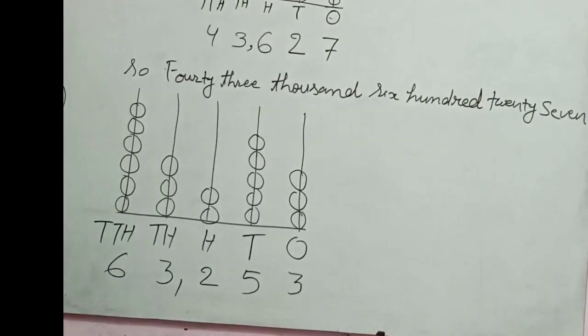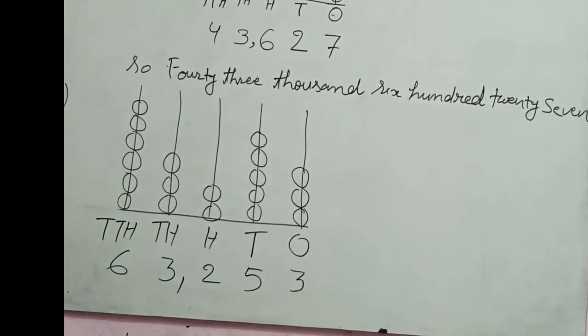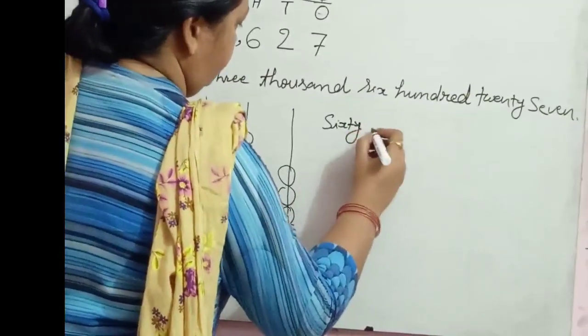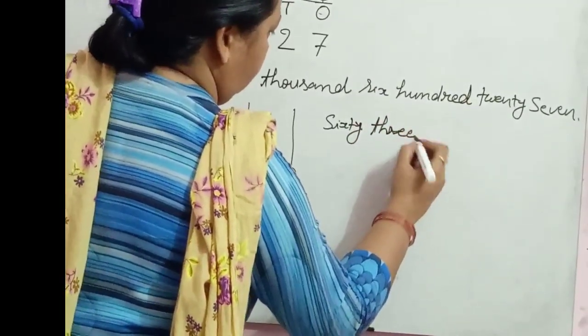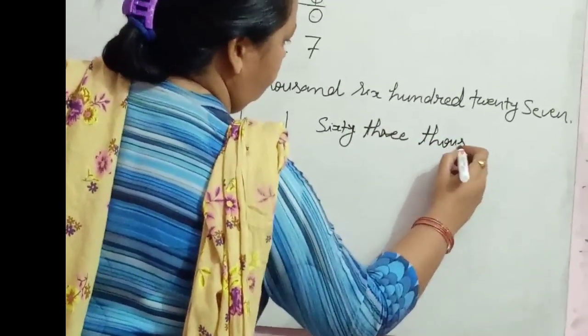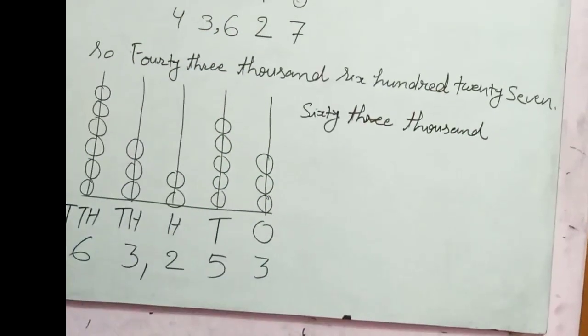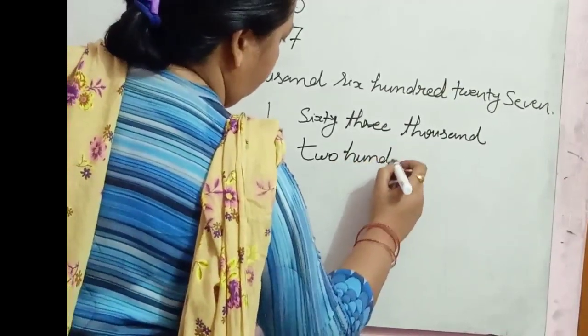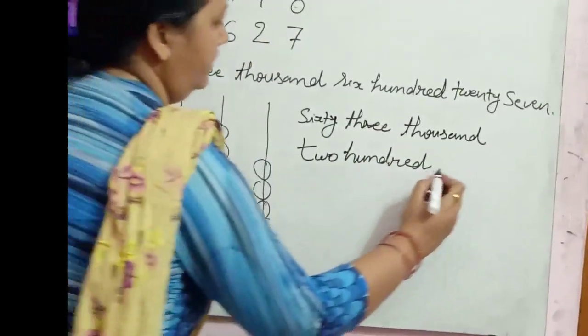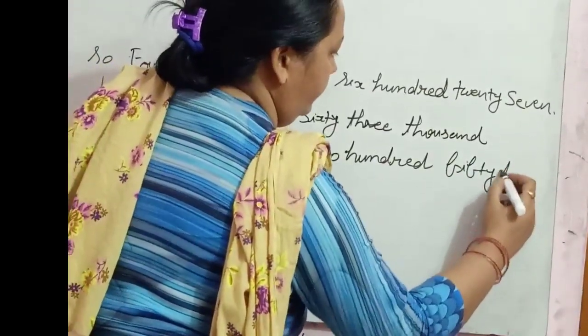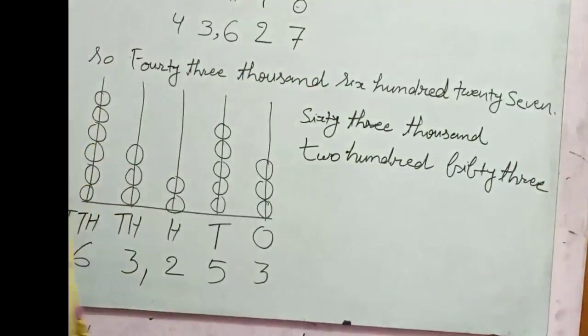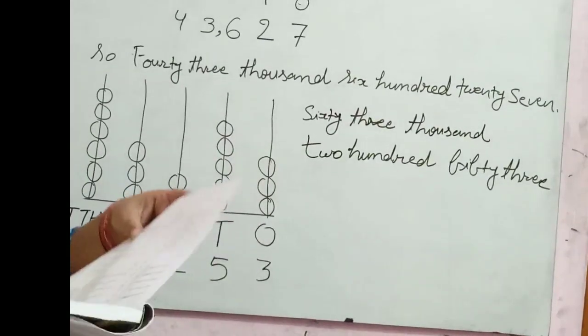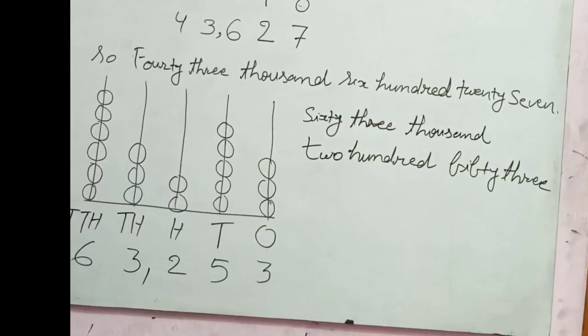1, 10, 100, 1000, 10,000. That is 63,253. According to this process, we can solve all problems. Now we come to the second question.